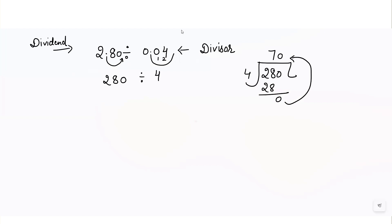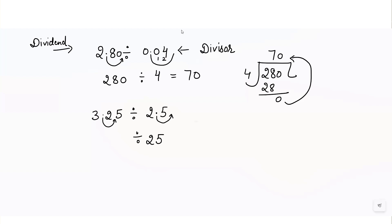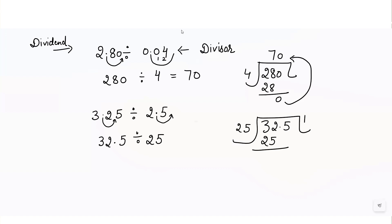When you divide 280 by 4, you get 70. We cannot divide 0 by 4 so we write 0 down, giving the answer equals 70. Similarly, for 3.25 divided by 2.5, I shift the point to get 25 as the divisor. I also shift the point one digit in the dividend to get 32.5. Dividing 32.5 by 25: 25 ones are 25, leaving a remainder of 7. Since we have a point here, we put the point in the answer and bring down the next digit.